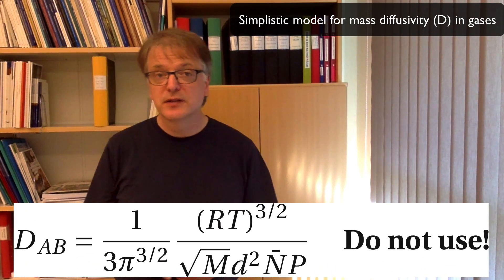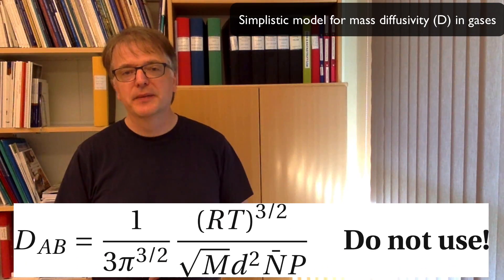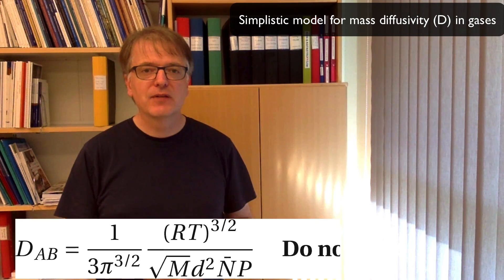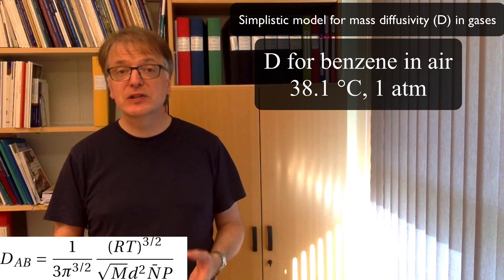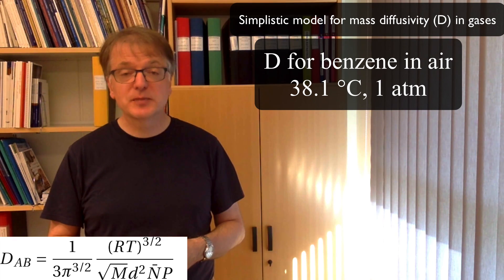Don't use this equation for any accurate calculations because this is bad. But let's try to use it anyway for something that we have a literature value for. And I happen to have a literature value for the diffusivity of benzene in air at 38.1 degrees Celsius and one atmosphere.